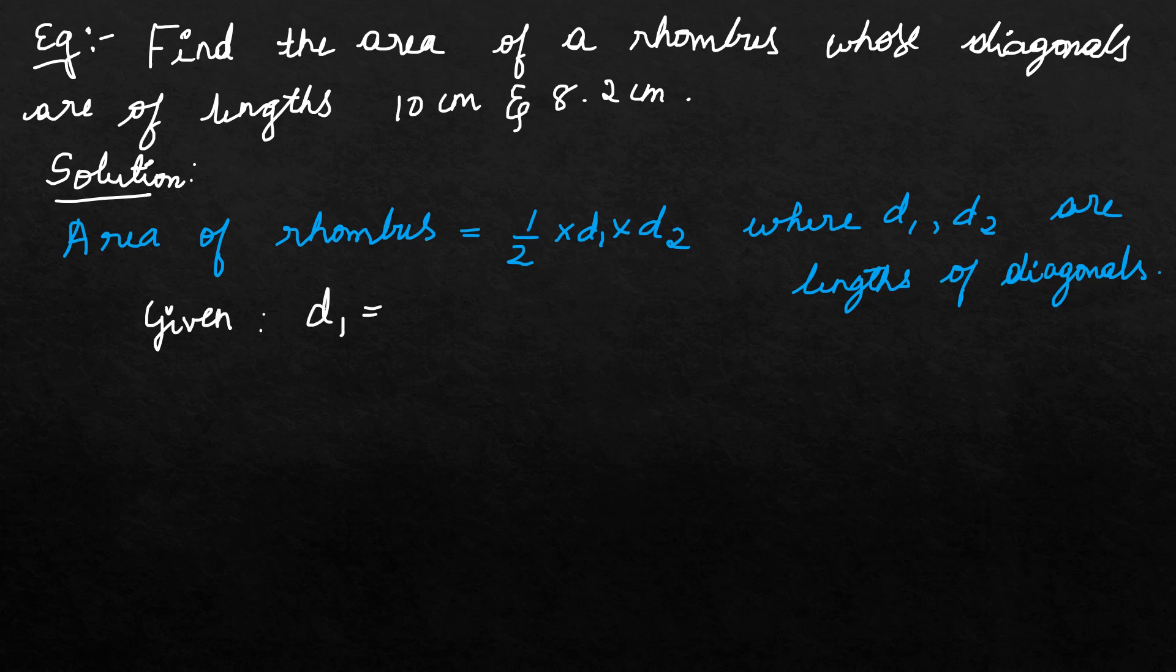Given: diagonal one is equal to 10 cm, diagonal two is equal to 8.2 cm. What is the formula to find the area of a rhombus? Area of a rhombus is equal to half into d1 into d2, where d1, d2 are lengths of diagonals. Substitute the given values and find the area of a rhombus.